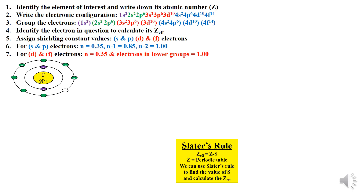Question 1: Determine the Z-effective for a 2p electron in fluorine atom. Step 1: The element is fluorine, and its atomic number is 9. Step 2: The electronic configuration of fluorine is 1s², 2s², 2p⁵. Step 3: Group the electrons as per the guidelines.